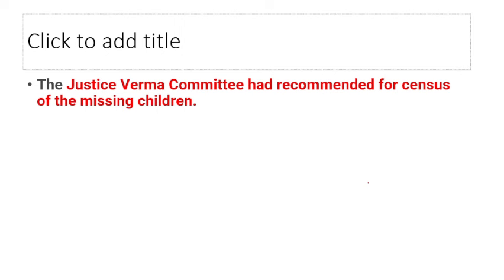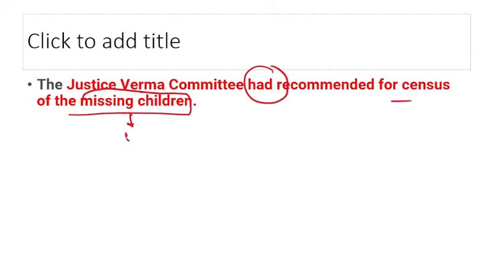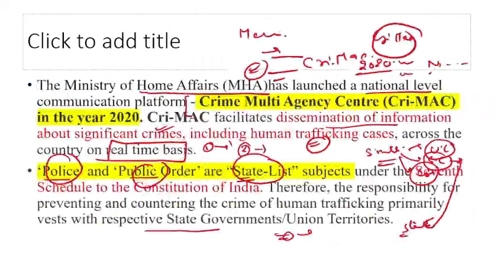The Justice Verma Committee recommended a census of missing children, as missing children are often involved in human trafficking and are being exploited. This completes the Human Trafficking section.